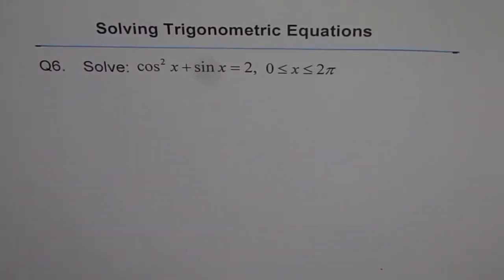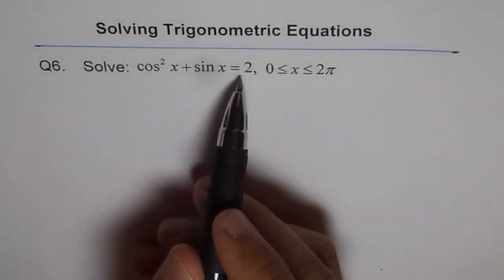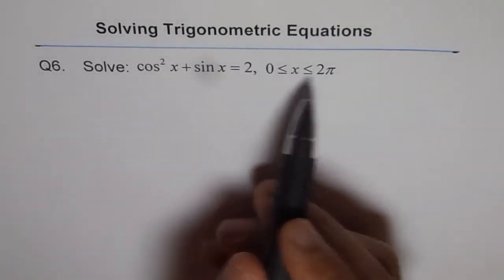Solving trigonometric equations, question 6. Solve cos squared x plus sin x equals 2, where x is between 0 and 2π.